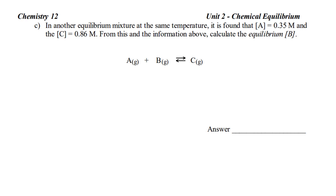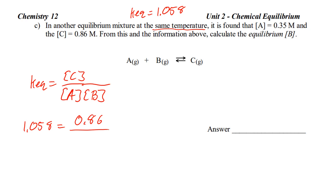So, it says, in another equilibrium at the same temperature. So, a continuation of the previous question. So, that means KEQ equals that 1.1 or 1.058 number. It is found that A is 0.35 and C is 0.86. From this and the above information, calculate B now. So, again, KEQ equals concentration of C over concentration of A over concentration of B.